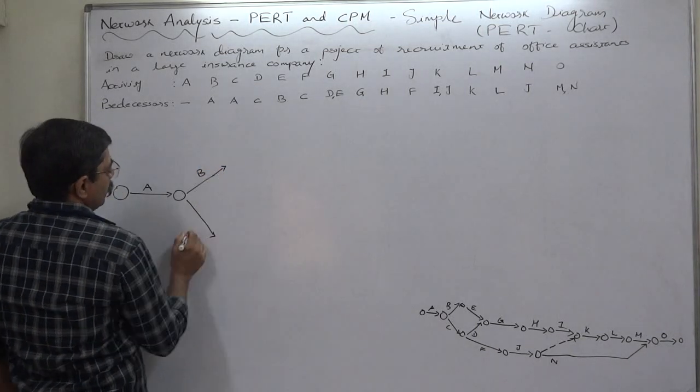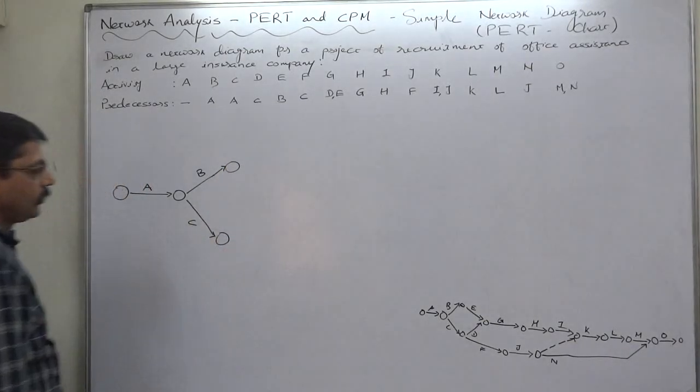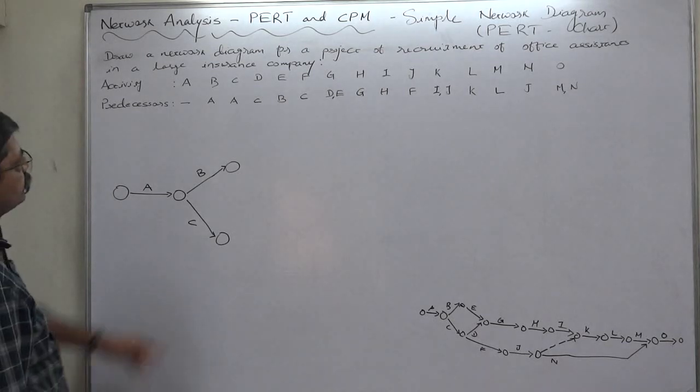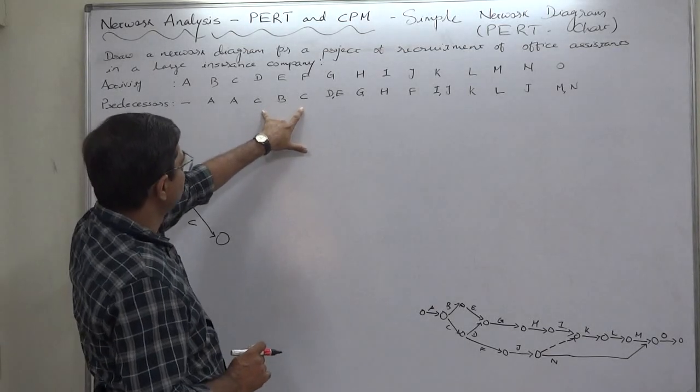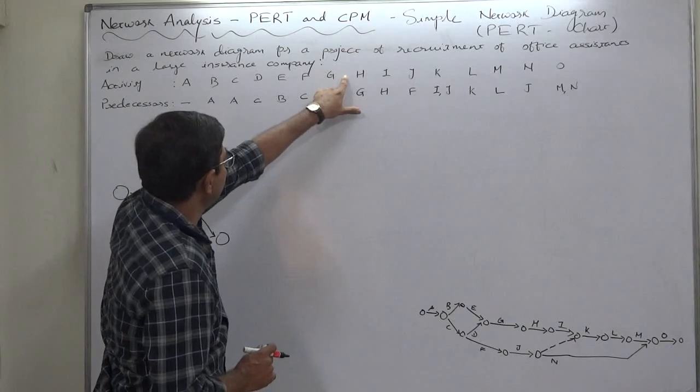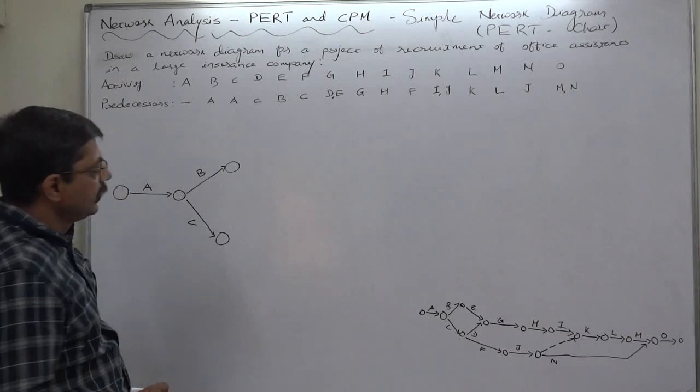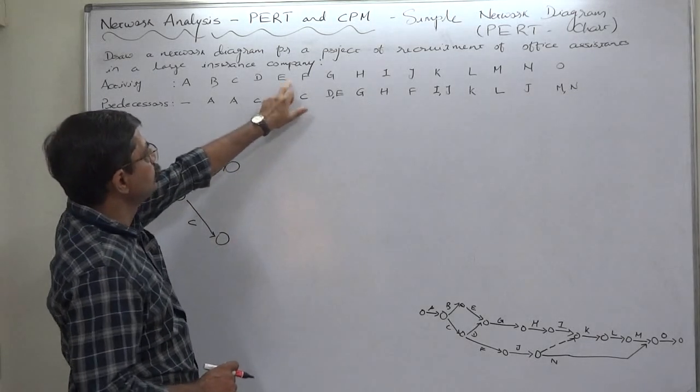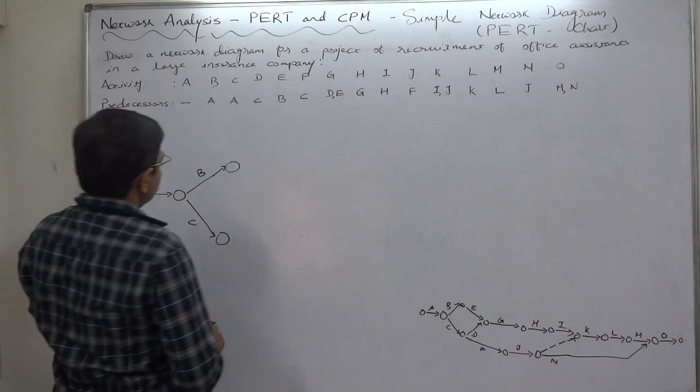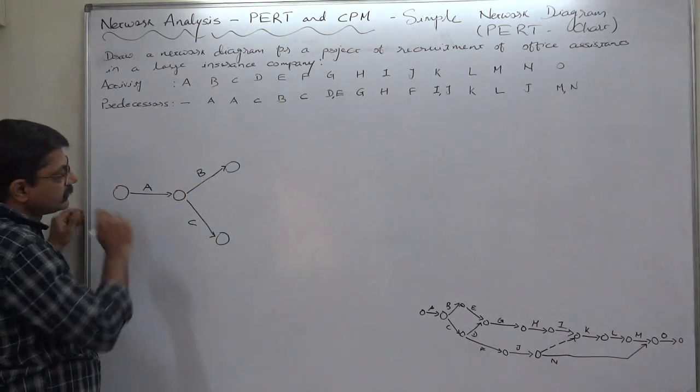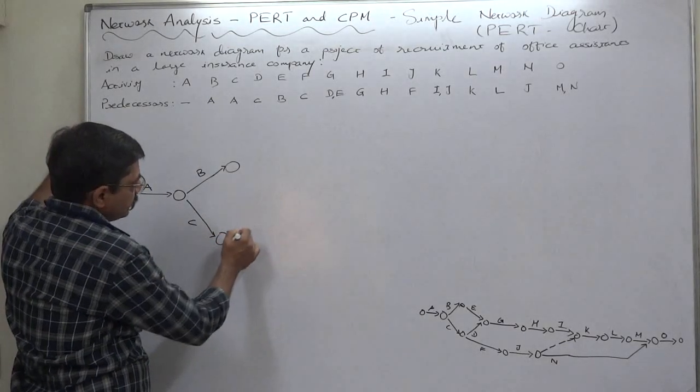Now take care because from C there are two activities D and F. D again meets E to start G, so it should be drawn in such a way that we can merge D and E to start G. And for that purpose it becomes very critical to draw D on upper side or lower side.